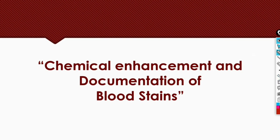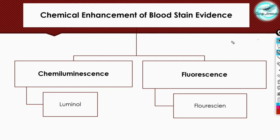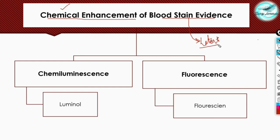So let's begin with the chemical enhancement of blood stain evidence. Chemical enhancement is usually done on blood stain evidence when it is in a latent condition — meaning the stains are not visible to the naked eye. We have to enhance them using certain chemicals to make them visible for further examination and investigation.